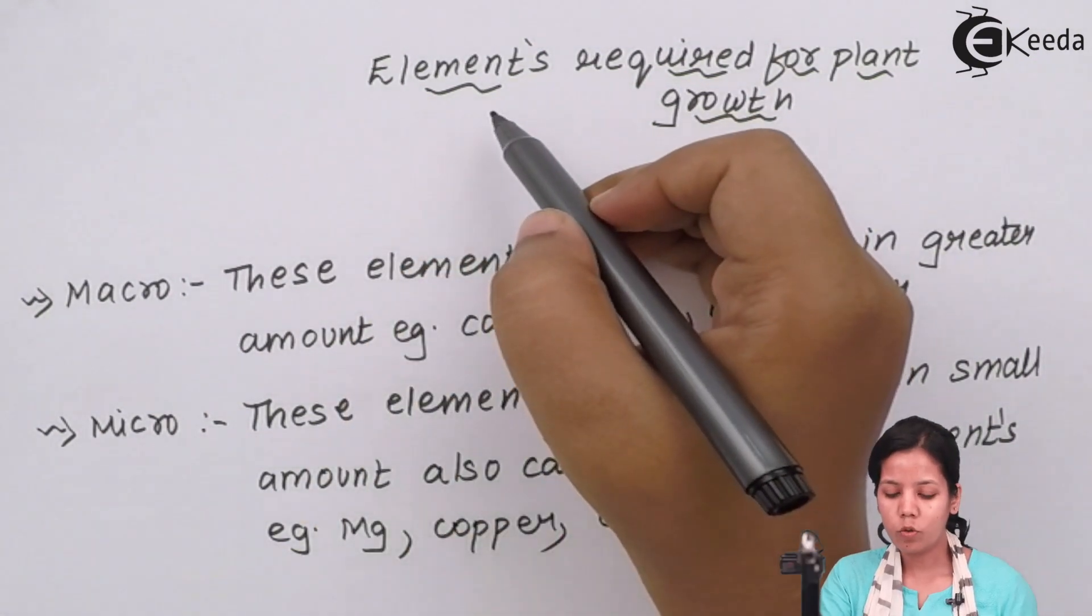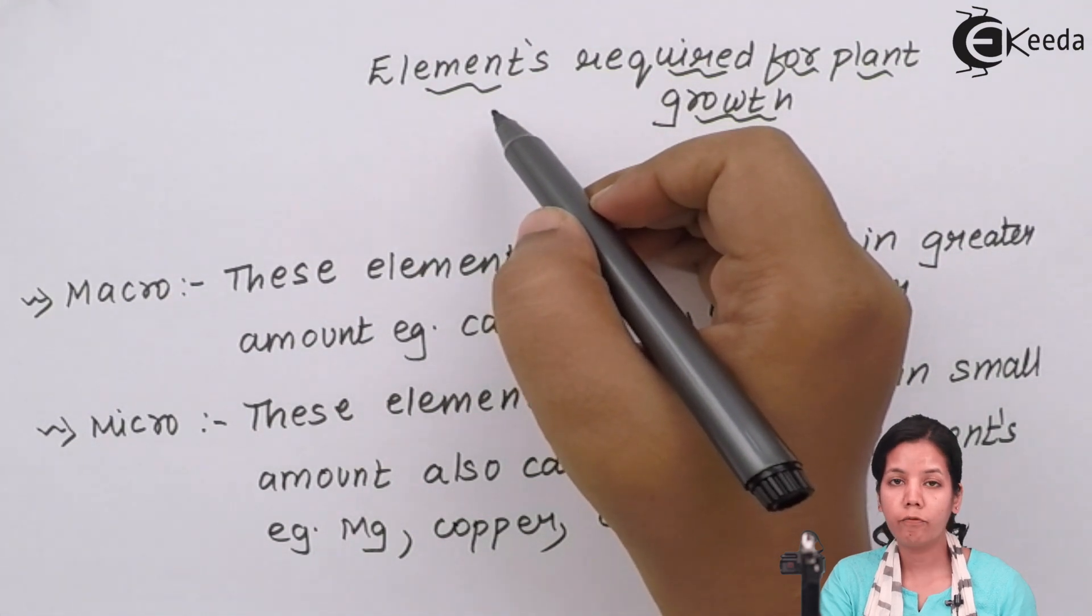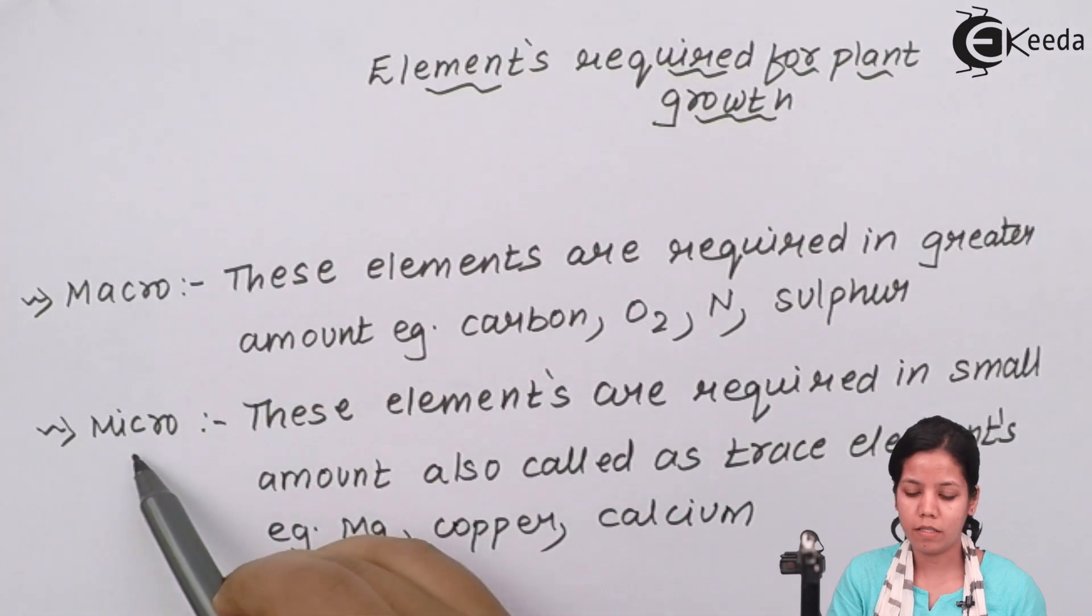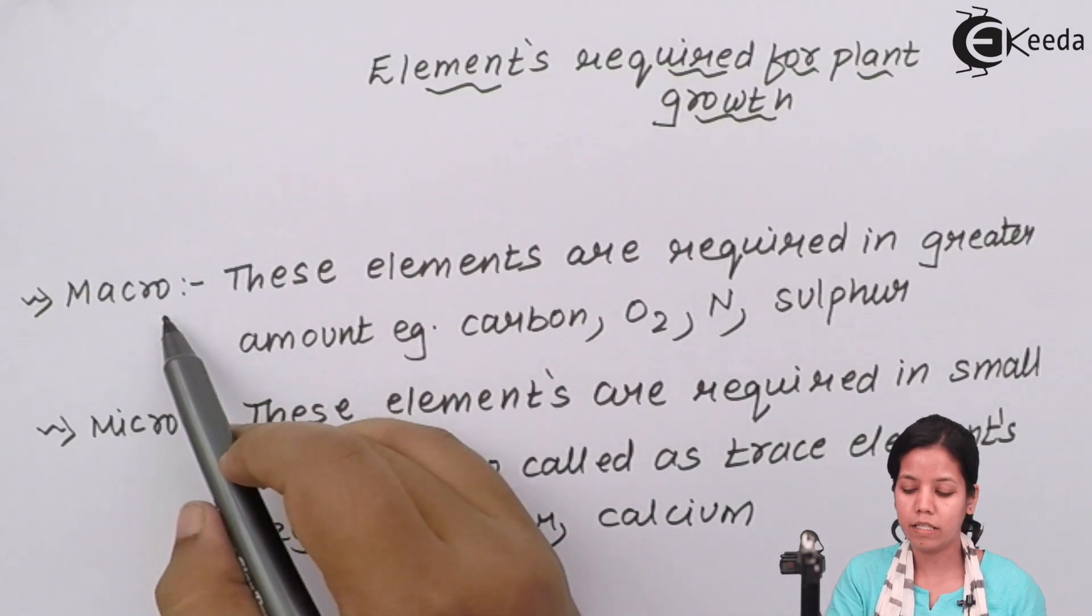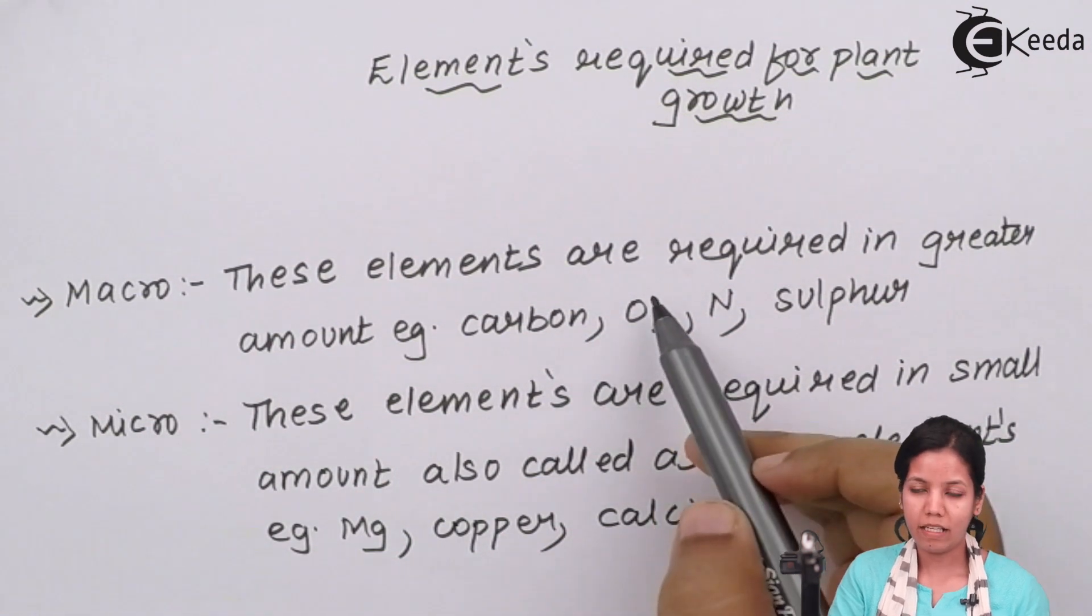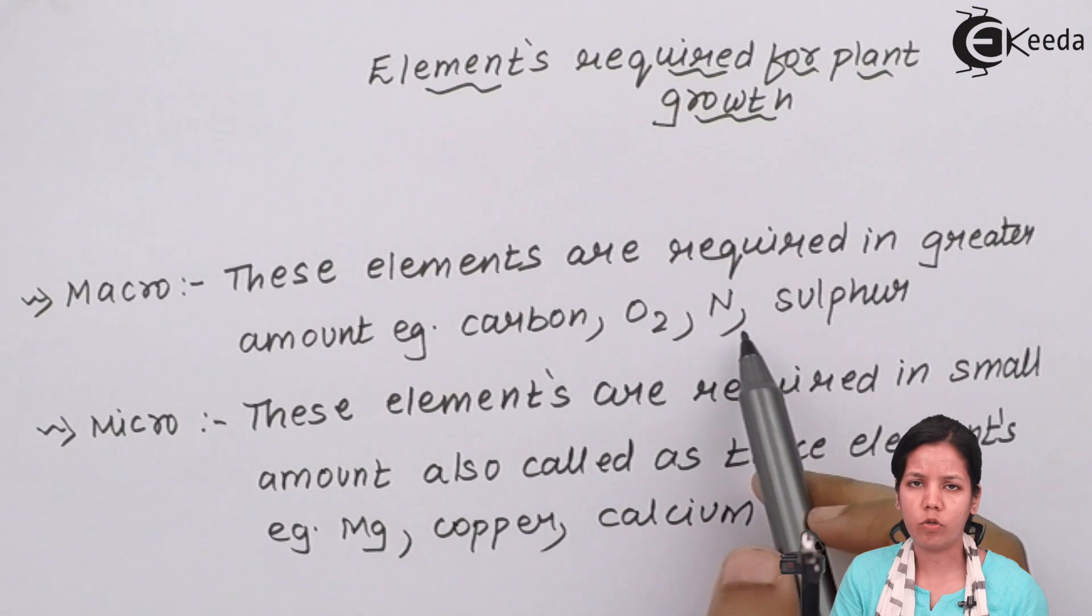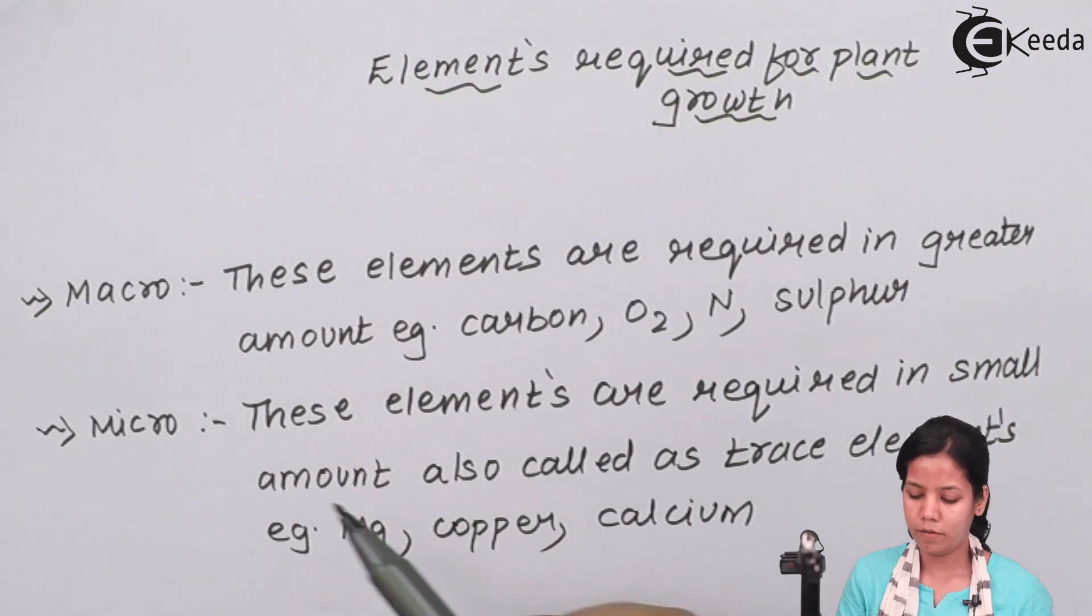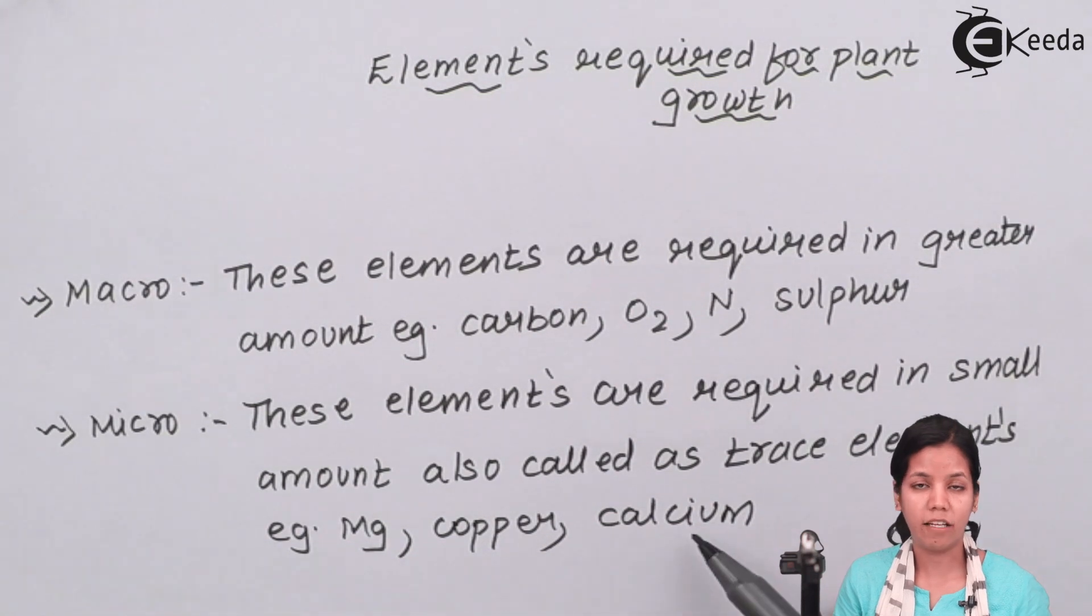The two most types of elements which are required for plant growth are the macro elements and the micro elements. Macro means the elements which are required in greater quantity, for example carbon, oxygen, nitrogen, sulphur. Micro elements are essential for metabolic activities of plant but they are required in trace amounts, for example magnesium, copper, calcium.